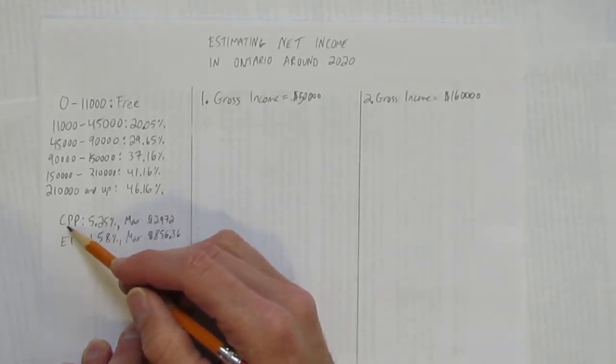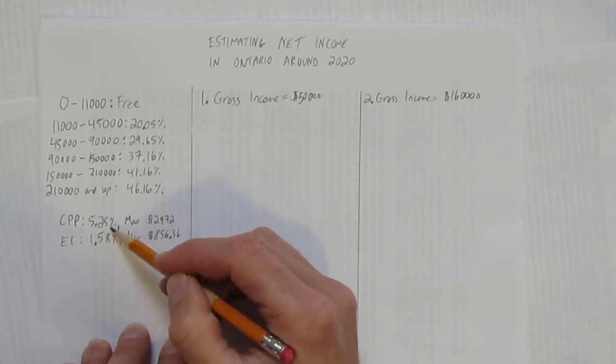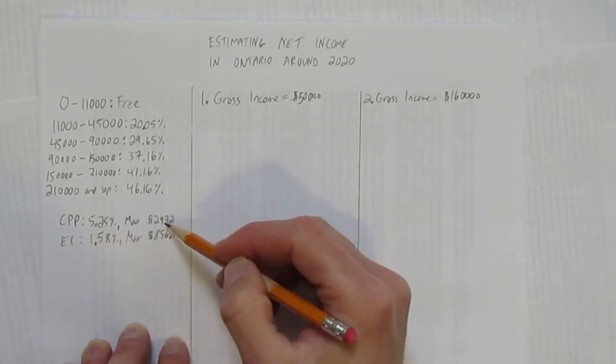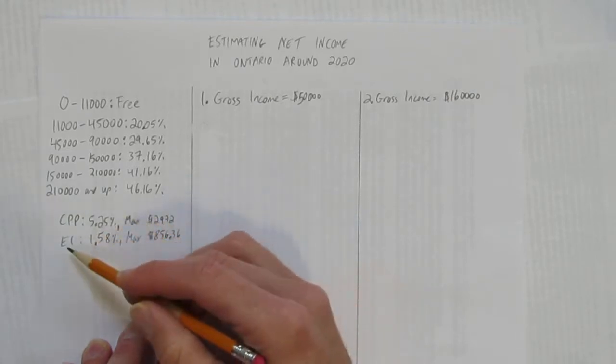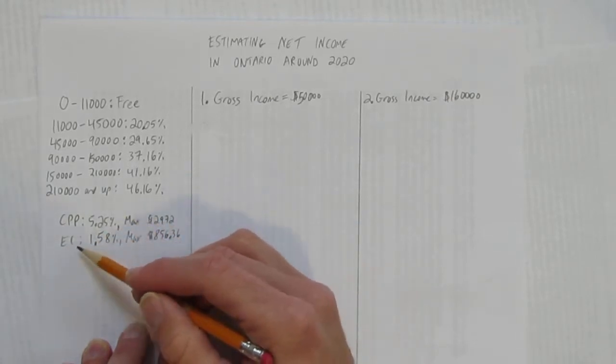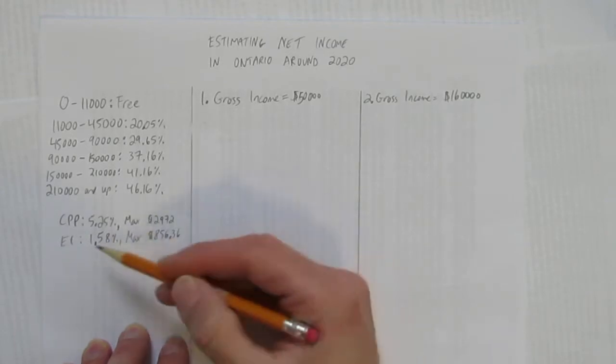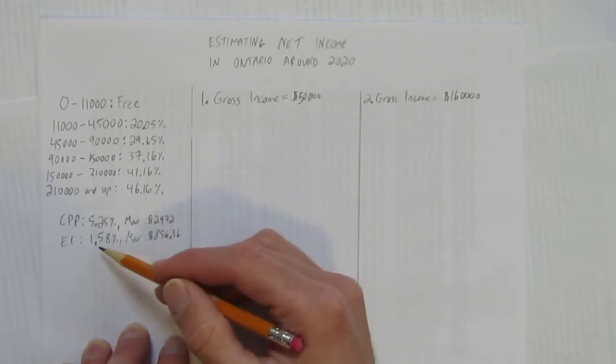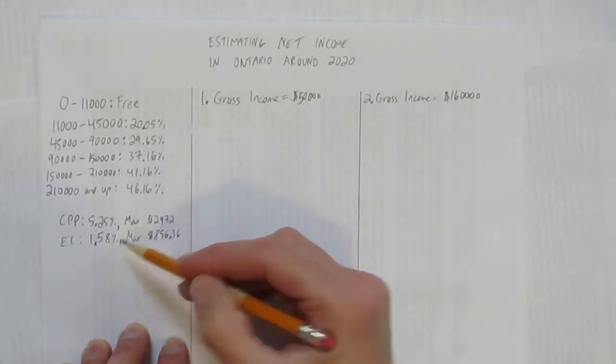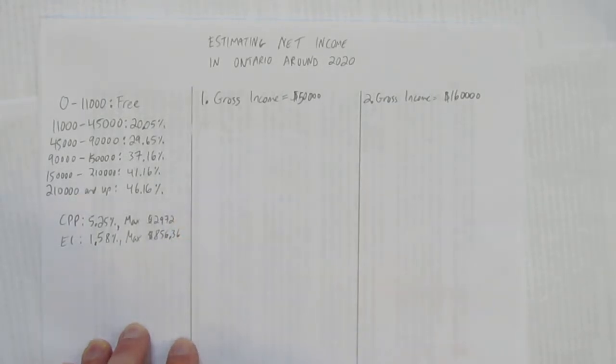Also note, these are the limits exactly for 2020. You pay into the Canadian pension plan, if you're a Canadian citizen, you pay 5.25%, but to a maximum of $2,972. You're also required to pay employment insurance, which is 1.58%, but to a maximum of $856.36.